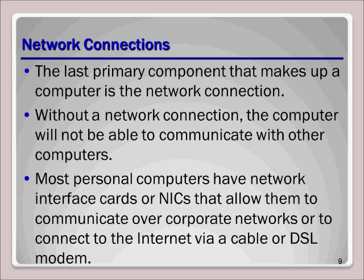The last major subsystem is the network connection. Older systems will most likely have 100-megabit network interfaces, while today's computers will include a gigabit network interface or a wireless network interface. Today, most activity done on the computer requires network connectivity. Even most home users depend on an internet connection, and corporate users need to share files and printers, access emails, and access various network applications.